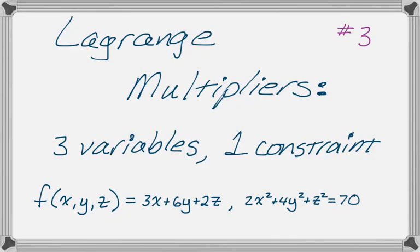Okay, in this video we are going to do some Lagrange multipliers. It'll be a three variable, one constraint problem. Specifically, we're going to work on f(x,y,z) equals 3x plus 6y plus 2z, and our constraint will be 2x squared plus 4y squared plus z squared equals 70.